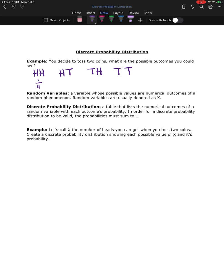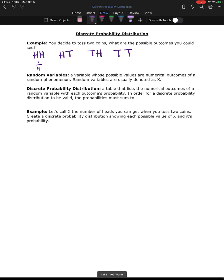In order for a discrete probability distribution to be valid, the probability column must sum to one. If it does not sum to one, you do not have a valid distribution.